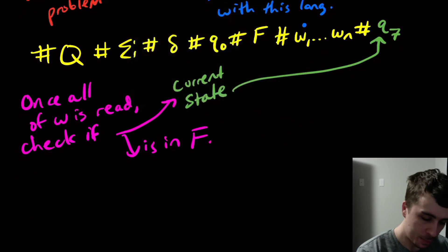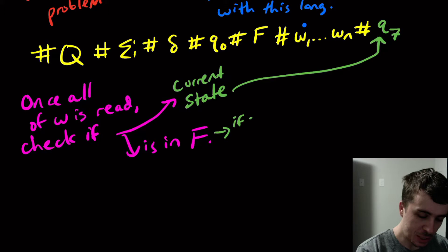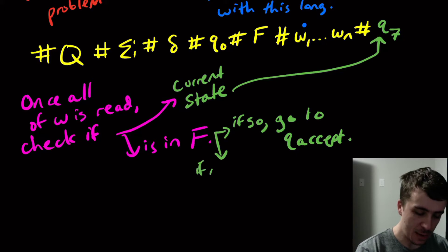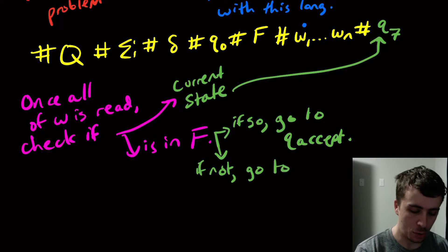So here, if so, go to q accept. And if not, then we definitely did not accept the input. So then we go to q reject.